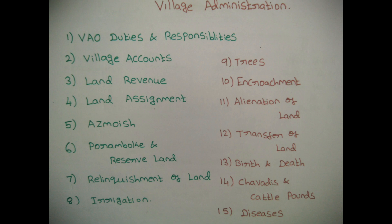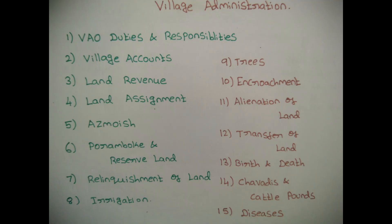11. Alienation of land. 12. Transfer of land. 13. Birth and death. 14. Birth and death. 15. Farm. These are the key topics under VIO duties and responsibilities.